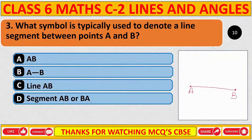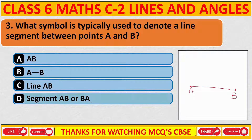What symbol is typically used to denote a line segment between point A and B? The correct answer is B: segment AB or segment BA.